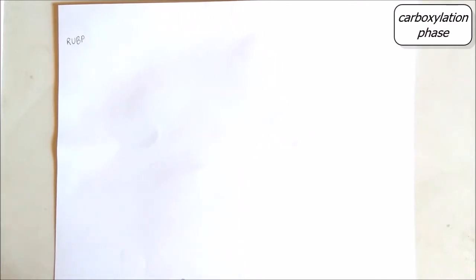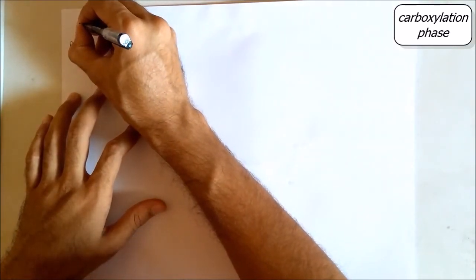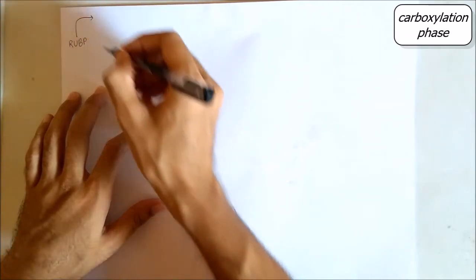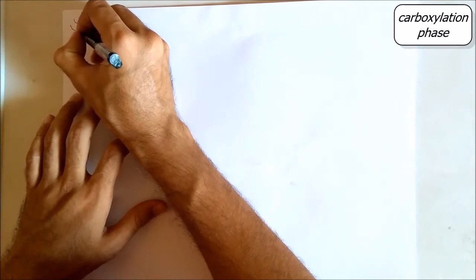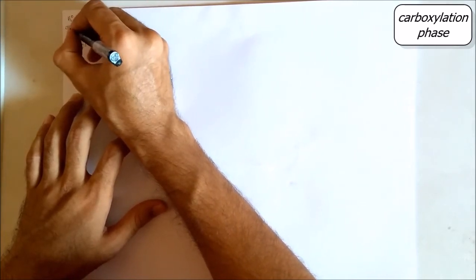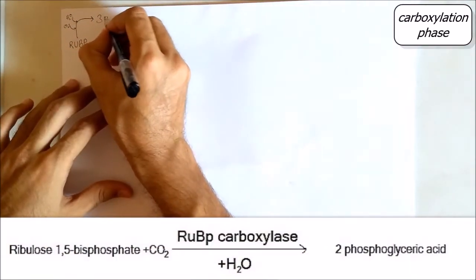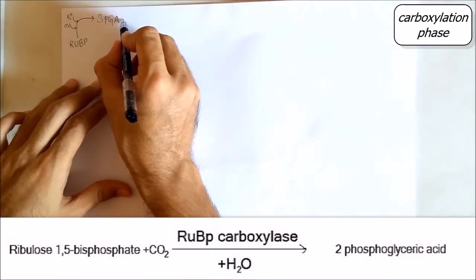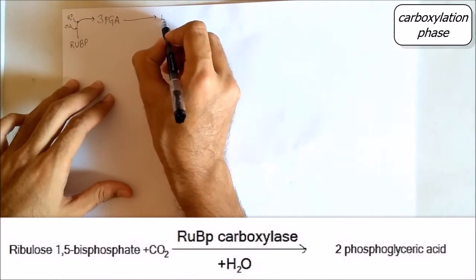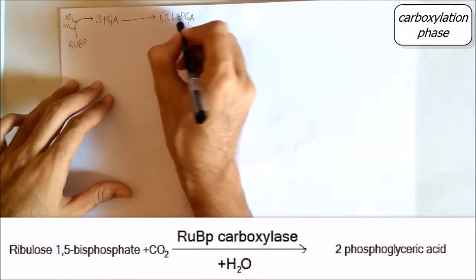RuBP is nothing but ribulose 1,5-bisphosphate. Carbon dioxide and water comes and attaches to this. From there, 1,3-bisphosphoglyceric acid is formed.